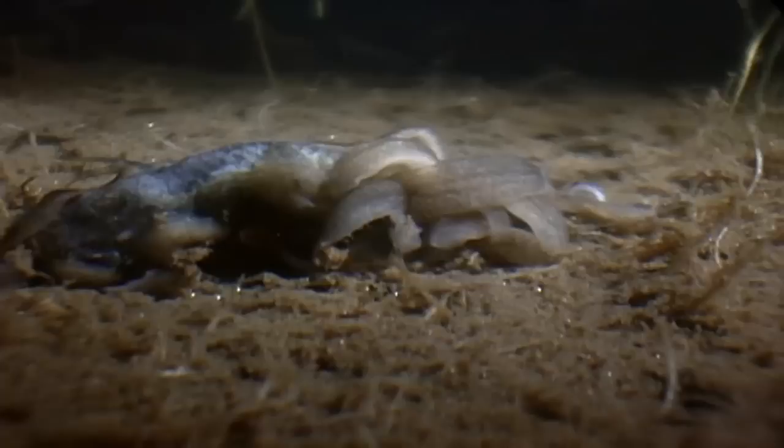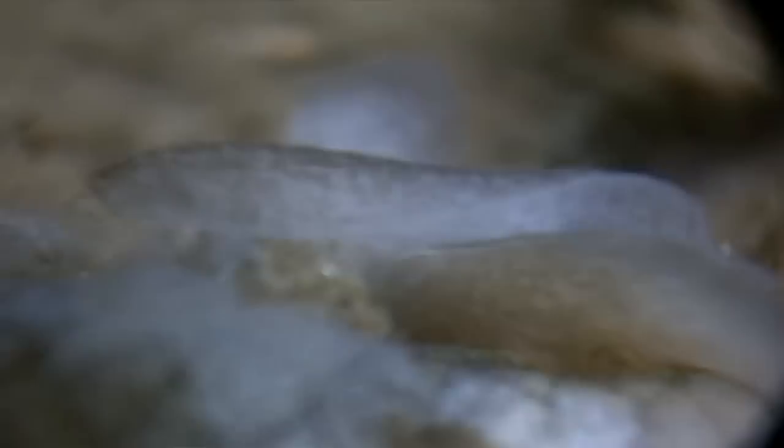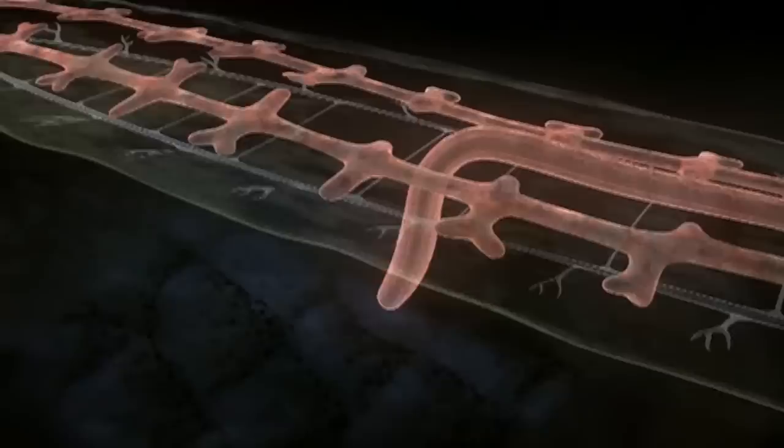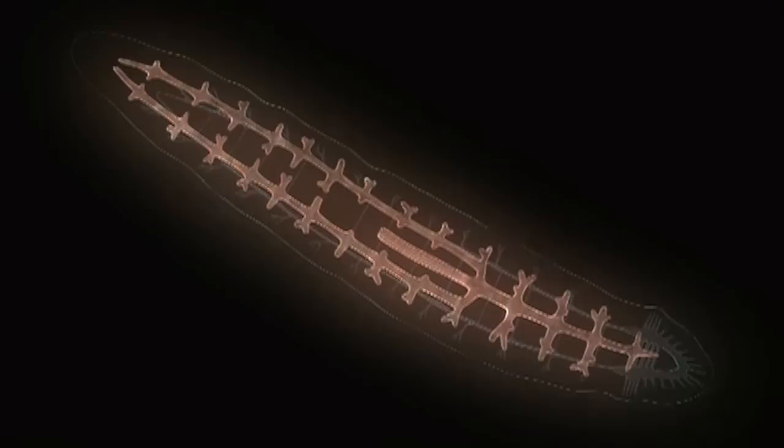As the planarians scavenge a fish, the pharynx goes into action. Once inside, food moves through a gut so extensive it reaches to every square millimeter of the flatworm's body.